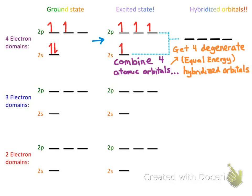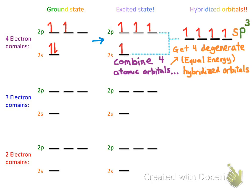We get four degenerate, or equal energy, hybridized orbitals. Since we used one s orbital and three p orbitals to make them, we call these hybridized orbitals sp3 — a wonderfully apropos name for orbitals made by combining one s orbital and three p orbitals. These orbitals are equal in energy, degenerate, and their energy is somewhere in between the energy levels of the s and p orbitals used to make them.